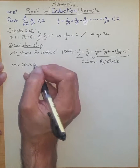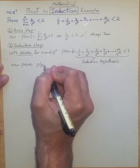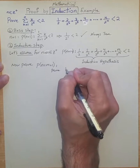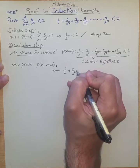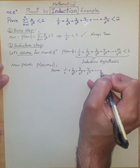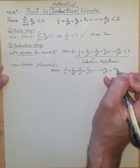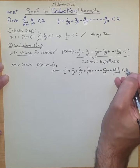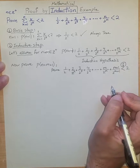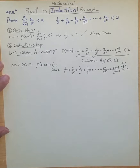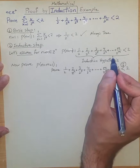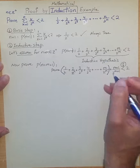Now we need to prove the predicate corresponding to n = m+1 is also true, which means proving 1/2 + 2/2² + 3/2³ + 4/2⁴ + ... + m/2ᵐ + (m+1)/2^(m+1) < 2. One interesting observation is the similarity between the left-hand side of this inequality and the left-hand side of the induction hypothesis — this portion is the same.